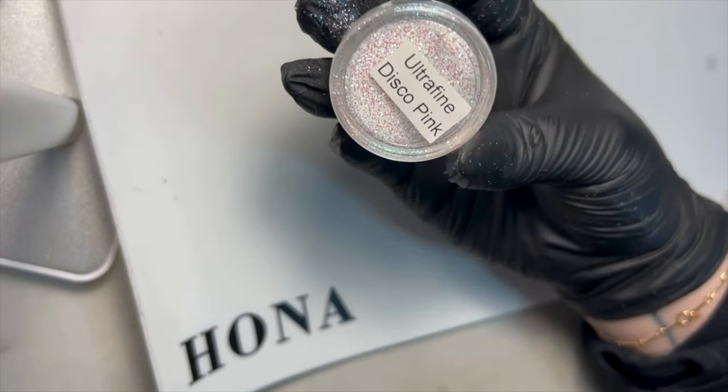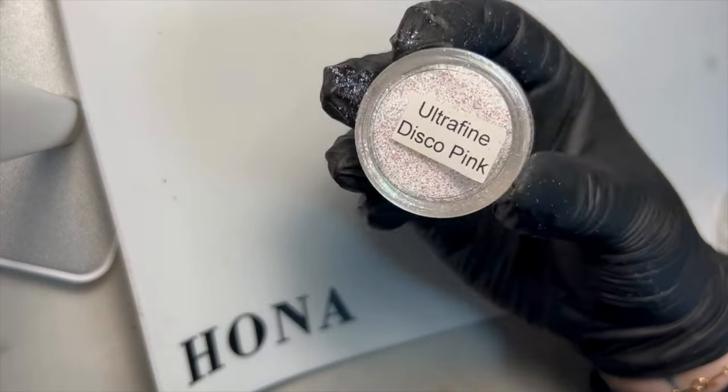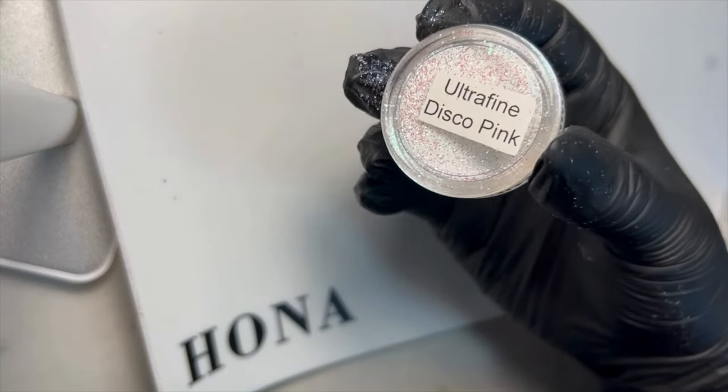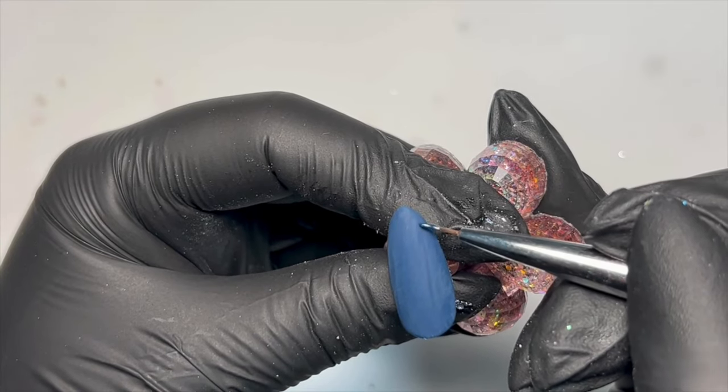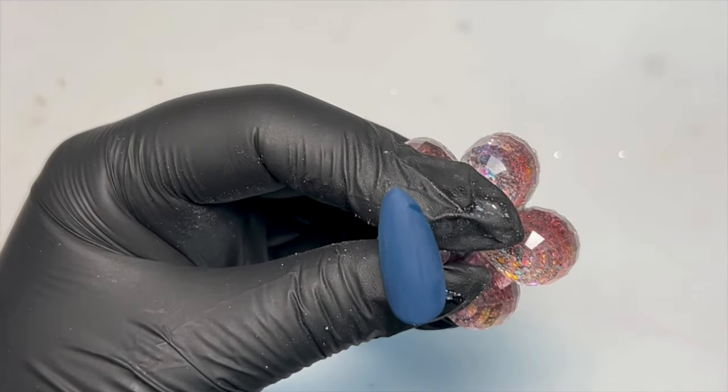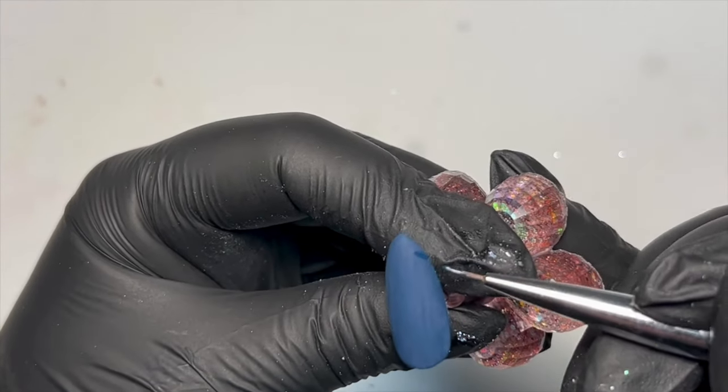So for my second part of this tutorial I'm going to be using a loose glitter called Disco Pink and this is also going to emulate that sugared texture onto the nail.